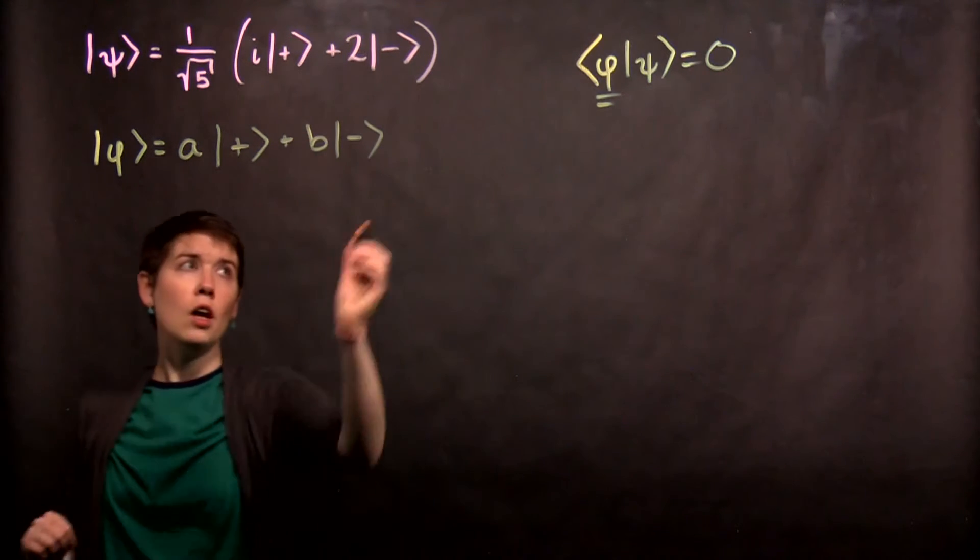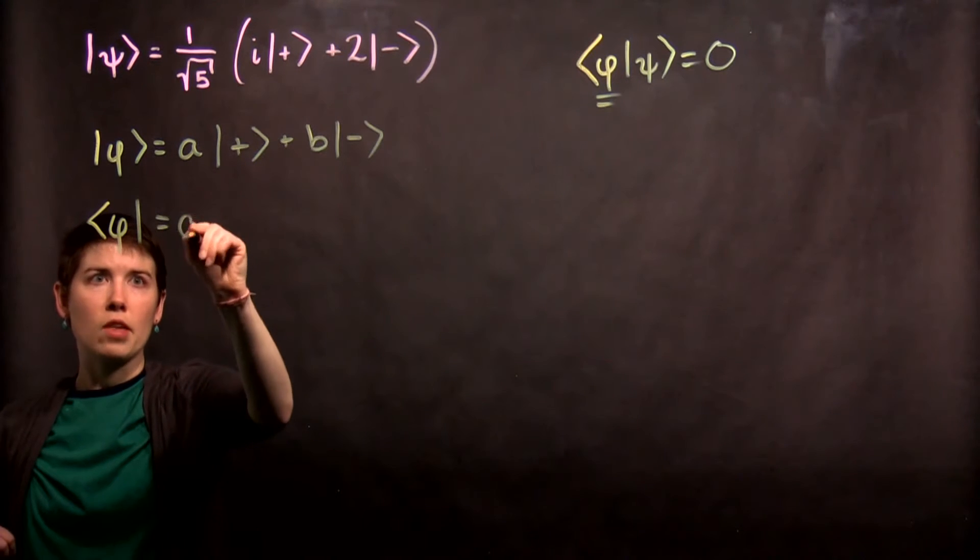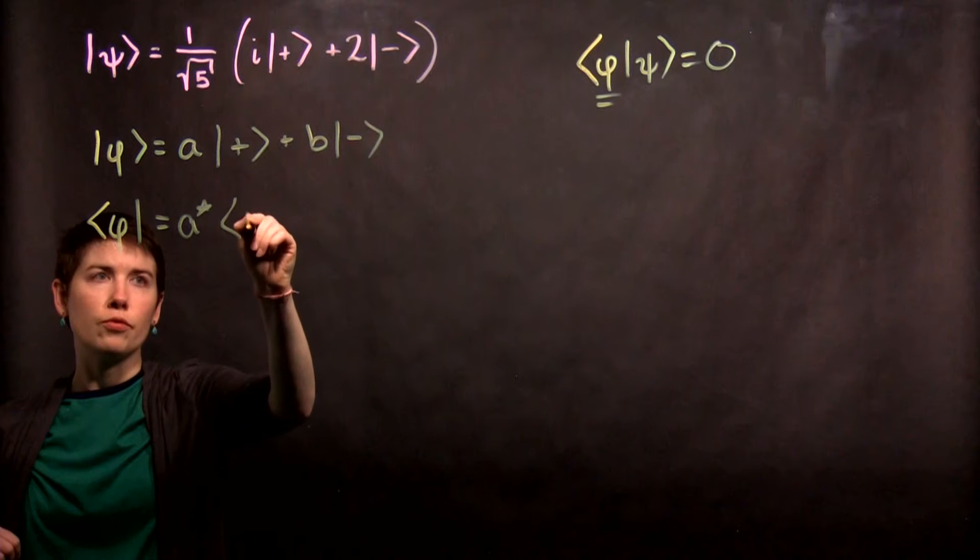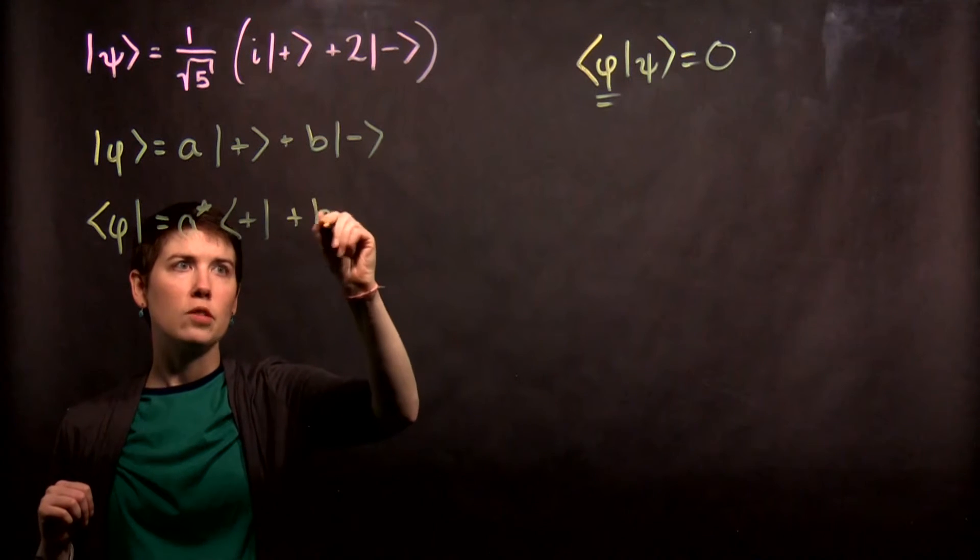So now I want to transform it into a bra state and we take that complex conjugate, don't forget about that since these coefficients are potentially complex, plus b star.